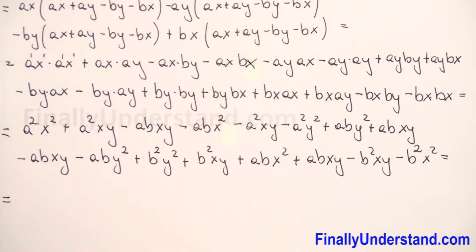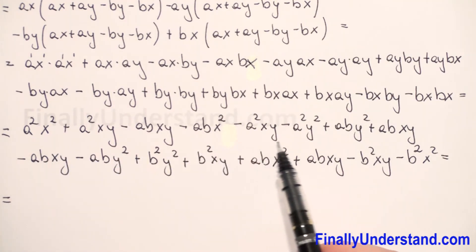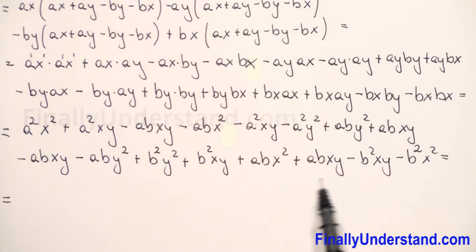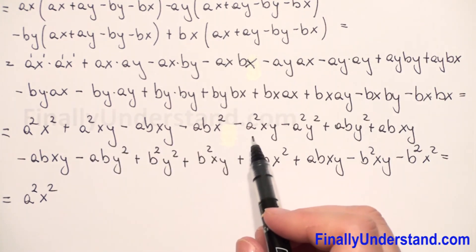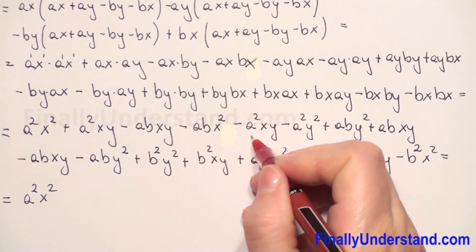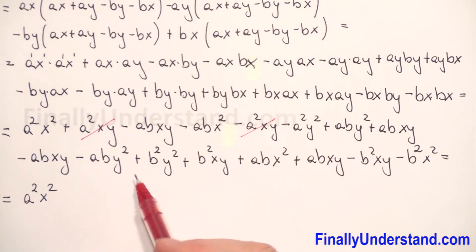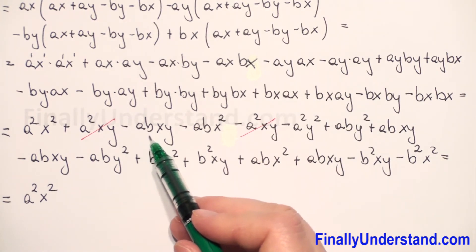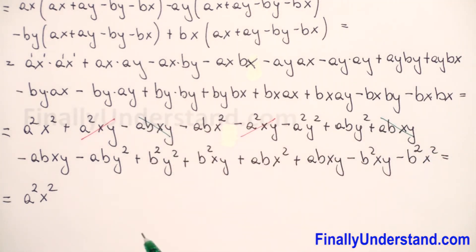Now we have to combine the like terms. First we have A squared X squared — we check if we have another, we don't — so we rewrite the first expression. Next we have A squared XY and we have negative A squared XY, so we can cancel out. Next we have ABXY and negative ABXY — positive and negative — so we can cancel out to give zero. Again we have negative ABXY and positive ABXY, so we can cancel out. And next we have negative AB X squared, negative AB X squared and positive AB X squared, so we can cancel out.